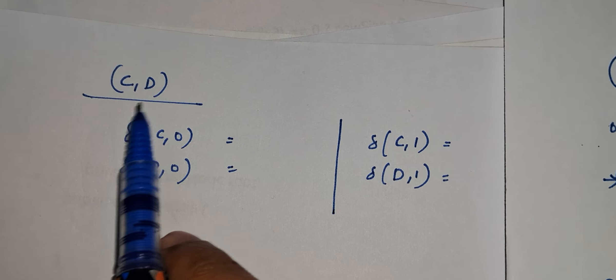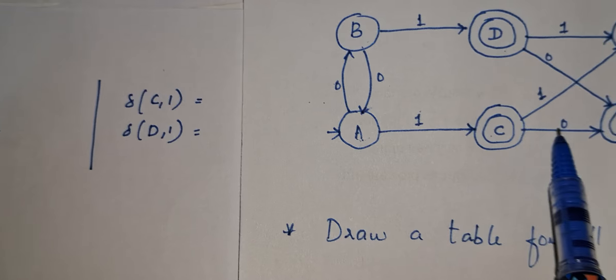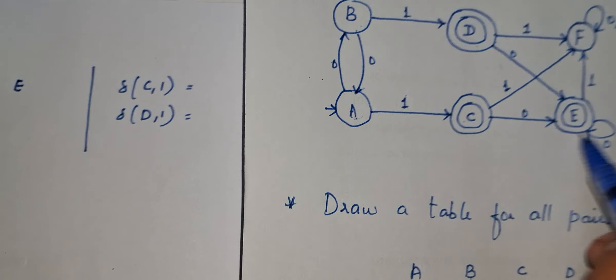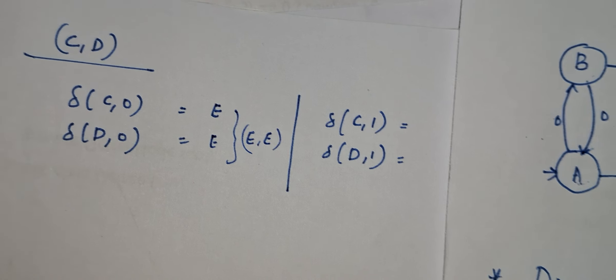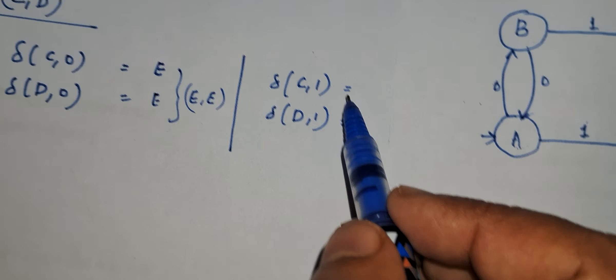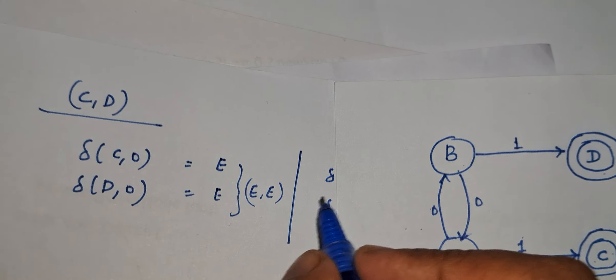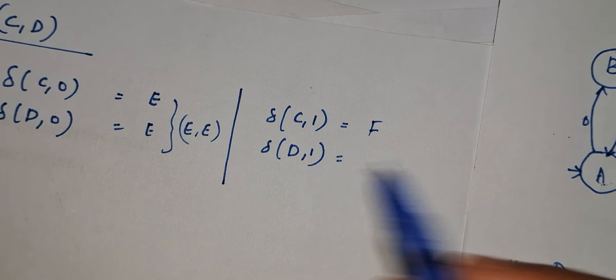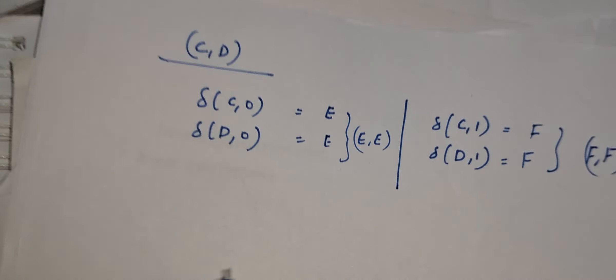Now taking pair C, D: C on 0 moves to state E; D on 0 also moves to state E. So we get pair E, E — no such pair exists in the table. C on 1 moves to F; D on 1 also moves to F. We get pair F, F — also not in the table. So we cannot mark the pair C, D.